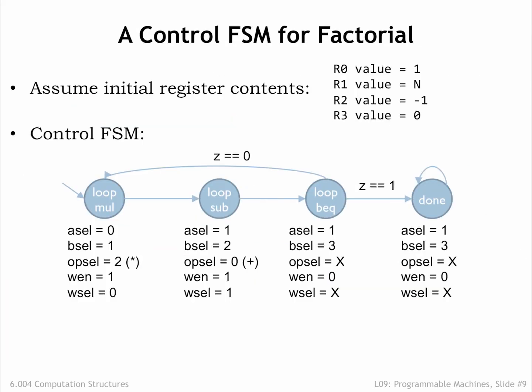Here's the state transition diagram for the control FSM we'd use if we wanted to use this datapath to compute factorial, assuming the initial contents of the data registers are as shown. We'd need a few more states than in our initial implementation since this datapath can only perform one operation at each step. So we need three steps for each iteration: one for the multiply, one for the decrement, and one for the test to see if we're done.